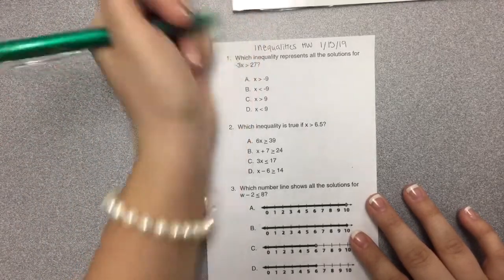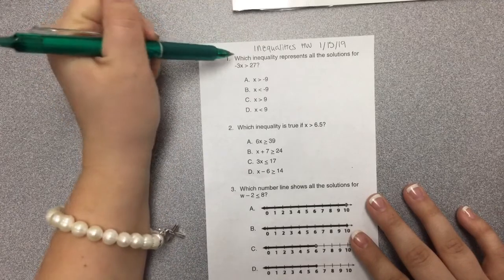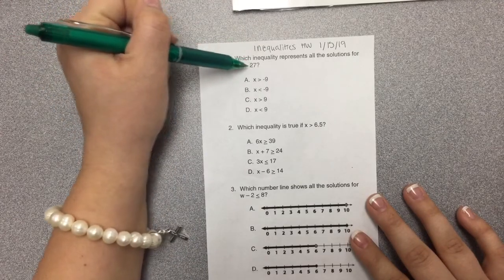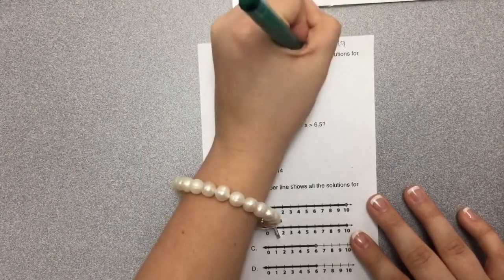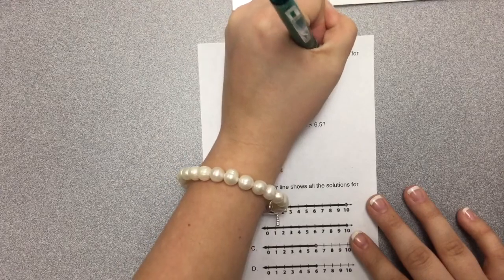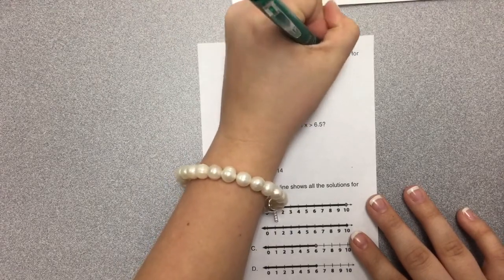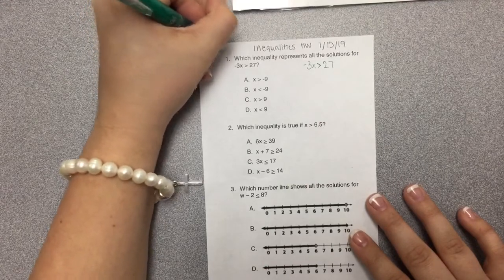So first, we've got which inequality represents all the solutions for -3x > 27. I'm going to write this over to the side so I have more space to work. I'm also going to put my name up in the corner.